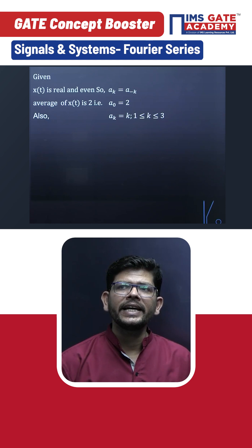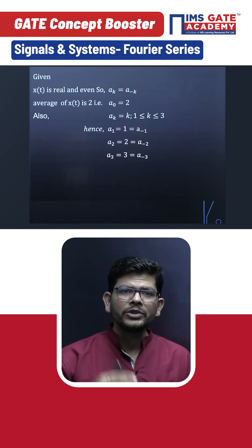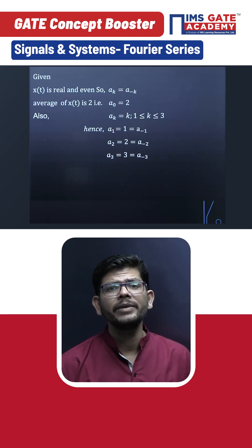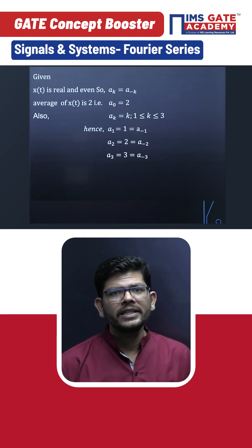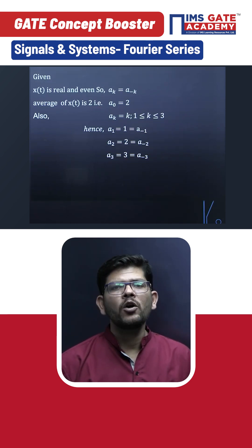Then they have given that a_k is equal to k whenever k is from 1 to 3. Then we can get, by using all this data, we can get that a_1 will be 1 as well as a minus 1. a_2 will be 2 as well as a minus 2. a_3 will be 3 as well as a minus 3, because a_k is given real and even. So now we have all the coefficients from a minus 3 to a plus 3.